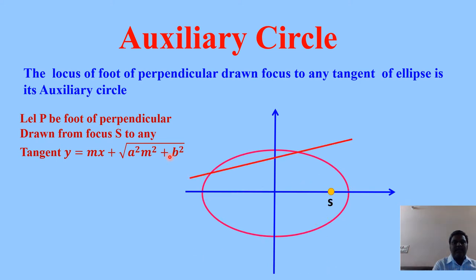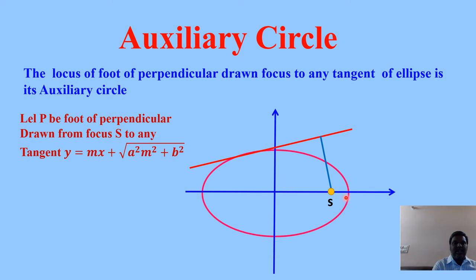This is the ellipse x²/a² + y²/b² = 1 in standard form. This is the focus S, and this is any tangent y = mx + √(a²m² + b²). Drawing the perpendicular from focus S to the tangent, the foot of perpendicular is P. You can draw infinitely many tangents and get corresponding feet of perpendicular.